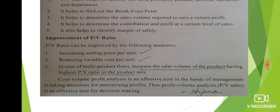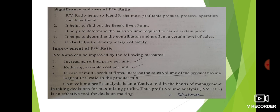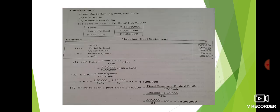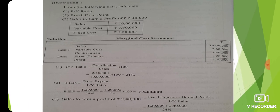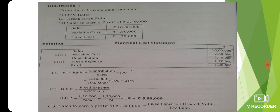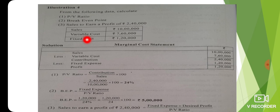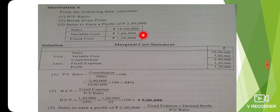I'm going to show you an example. From the following data, calculate the PV ratio and break-even point. Sales are 10 lakhs, variable cost is 7.60 lakhs, fixed cost is 1.20 lakhs, and desired profit is 2.40 lakhs.